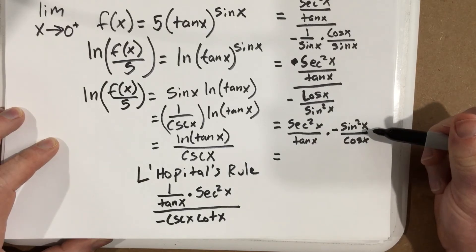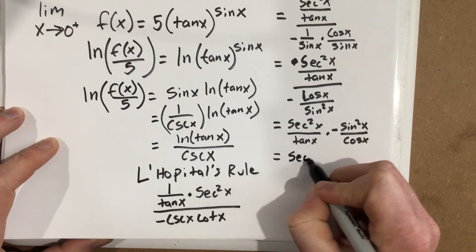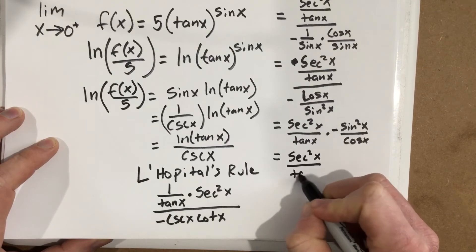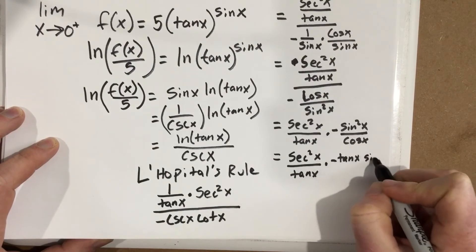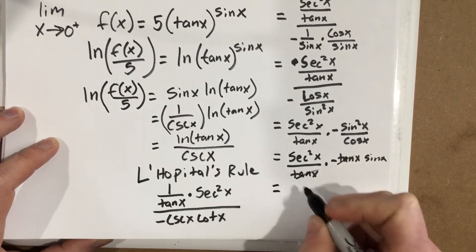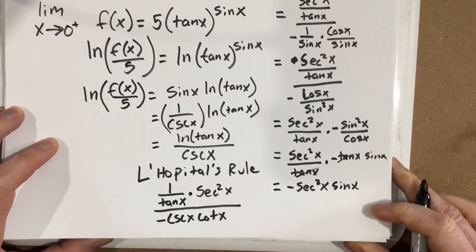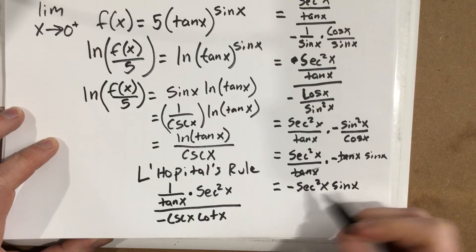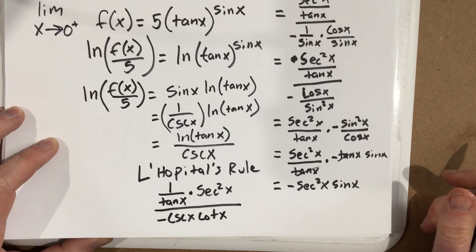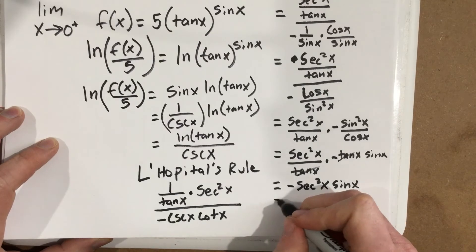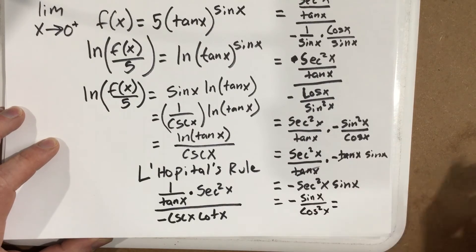Since sin(x)/cos(x) = tan(x), we can write this as sec²(x)/tan(x) · (−tan(x)·sin(x)). The tan(x) terms cancel, leaving −sec²(x)·sin(x). Since sec²(x) = 1/cos²(x), this simplifies to −sin(x)/cos²(x).